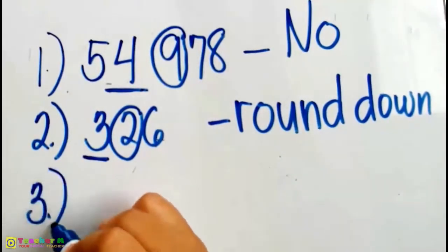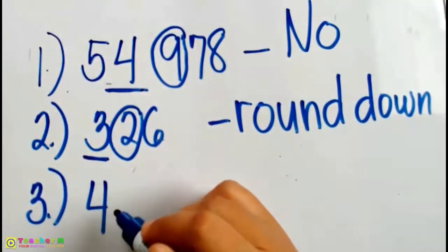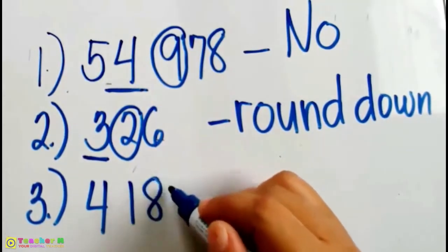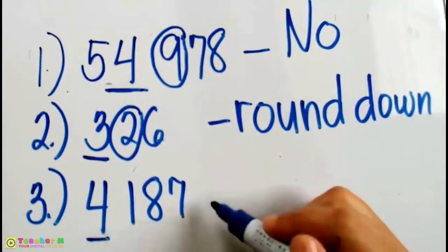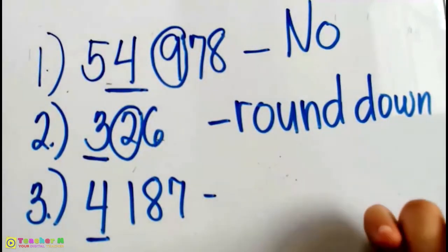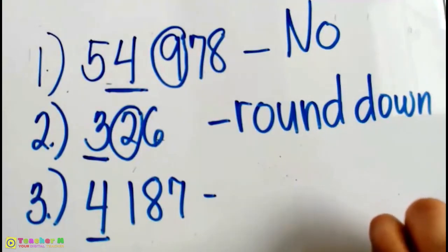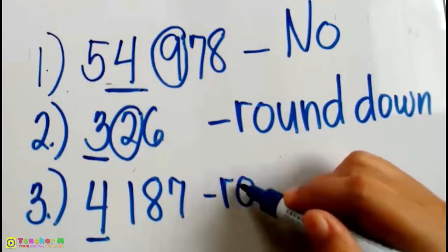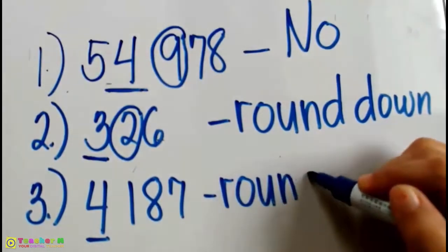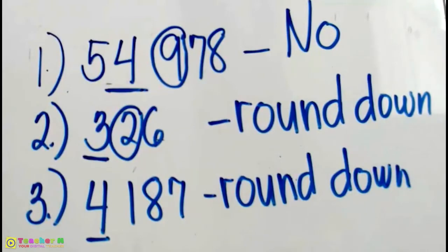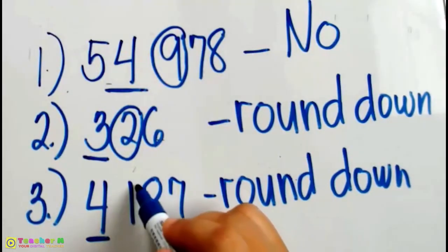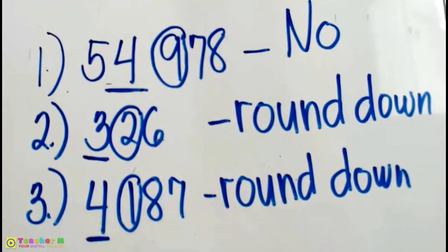Number 3: The number is 4,187, and the underlined digit here is 4. Are we going to round this number down or no? We are going to round this number down, so the answer is round down. Why? Because the digit we are rounding here, which is 4, is followed by 1. Very easy, right?